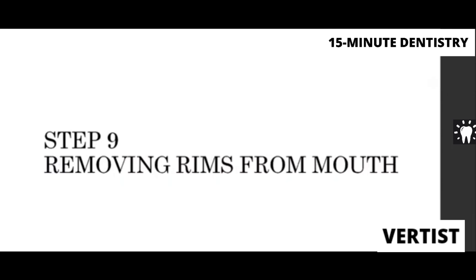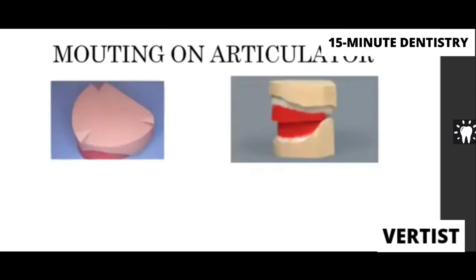An important step is removing the rims from the patient's mouth: place your index fingers below the border of the lower record base, ask the patient to slowly open, displace the mandibular record base, then remove the maxillary and mandibular rims together. After removal, make orientation notches on the base of the cast before mounting on the articulator. Seal the record bases to the cast and seal the maxillary and mandibular wax rims together so they don't move during mounting.